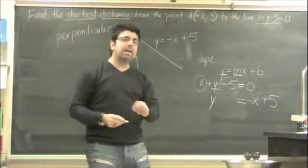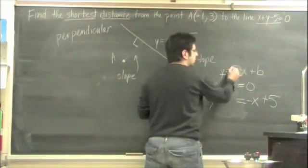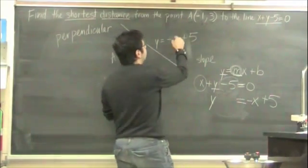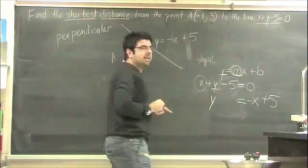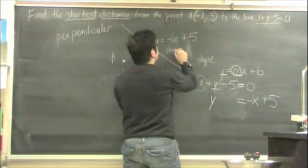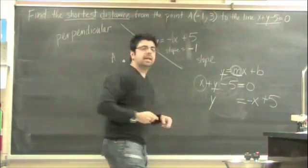From this equation, we can extract our slope. The slope of our original line is the value that is in front of x. The value right now in front of x is really an imaginary negative 1. So the slope of this line is equal to negative 1.